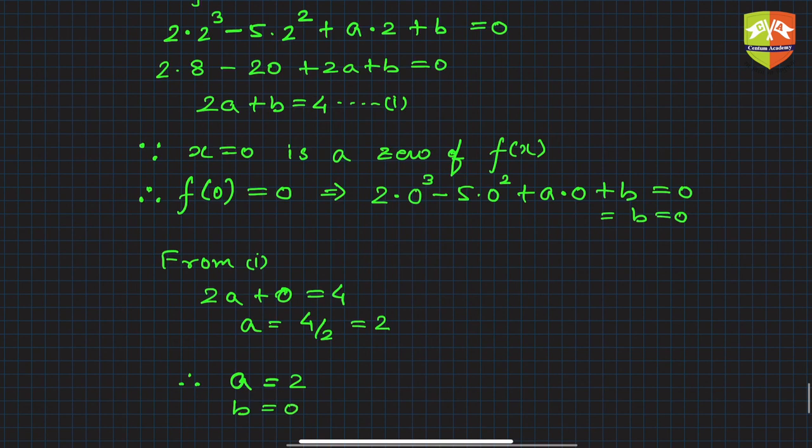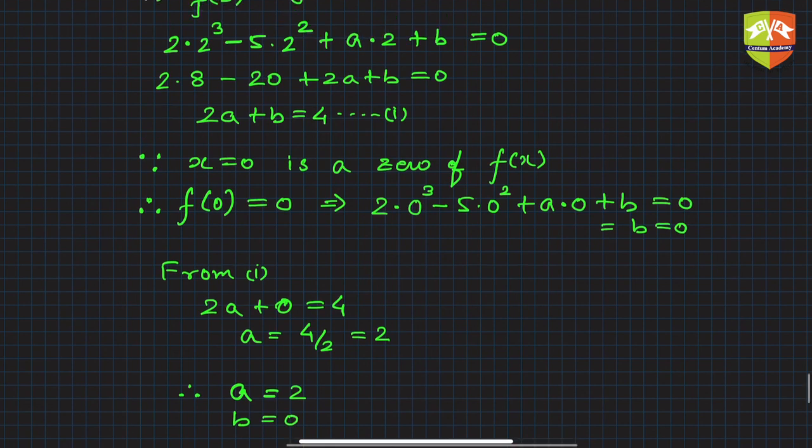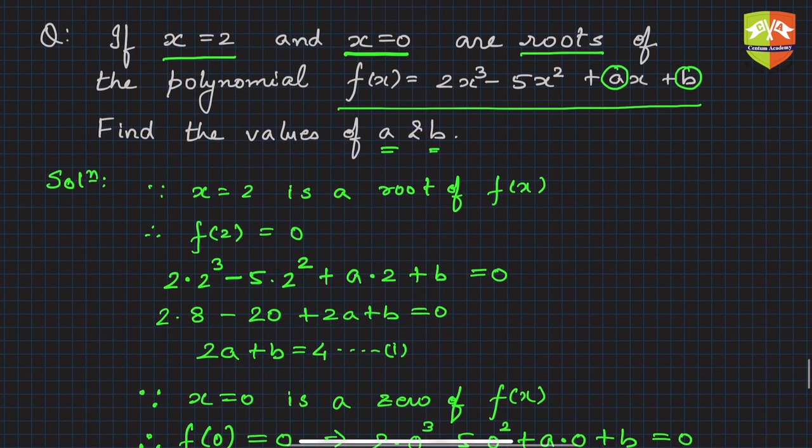So in this question, what is the learning? A polynomial is given and some coefficients are unknown, but the zeros are given. Then you can find out the unknown coefficients also by using the concept that a zero of a polynomial will reduce the value of the polynomial to 0.